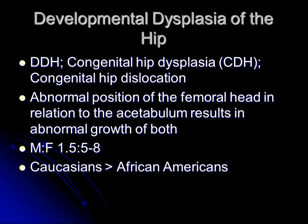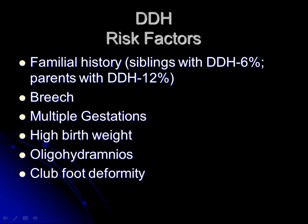The most common reason I do hip ultrasound is for DDH, or developmental dysplasia of the hip, also previously known as congenital hip dislocation or congenital hip dysplasia. The gist is that there's abnormal position of the femoral head in relation to the acetabulum, and so both of them develop abnormally. It's much more common in females than males and more common in Caucasians than African Americans. We'll often screen infants not because they have an abnormal physical examination, but because they have a risk factor.